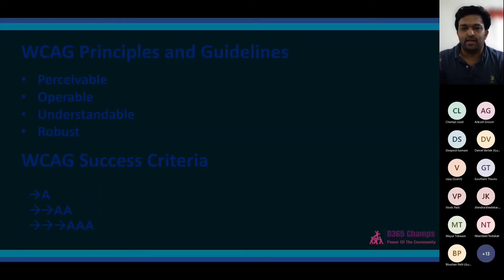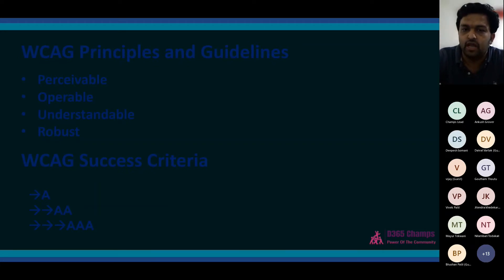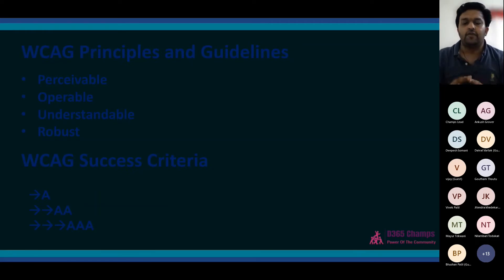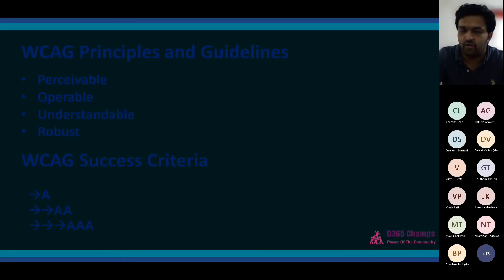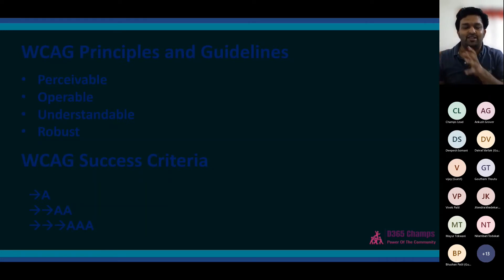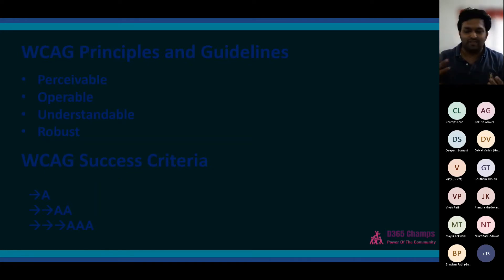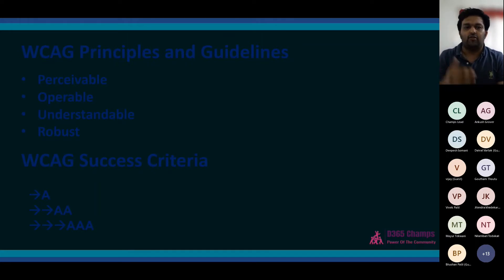The third principle is Understandable — the application should be readable and predictable. Go with the standard. Don't try to make it so flashy that it breaks predictable patterns. For example, I was using a website recently trying to see my profile — normally profiles are in the top right corner, but on this website it was in the lower left corner. Even as a fully able person, I struggled to find it. Go with the predictable way — follow standard UI conventions.